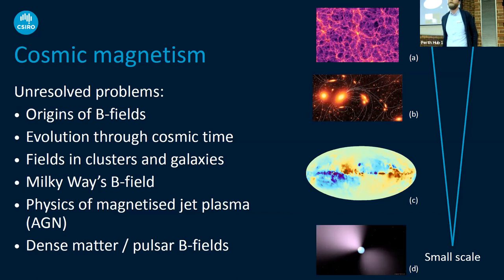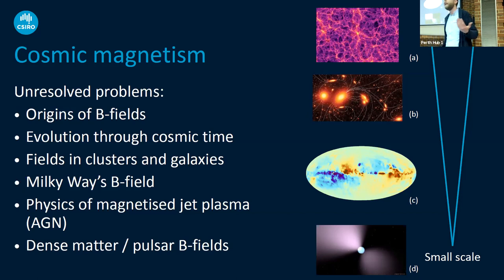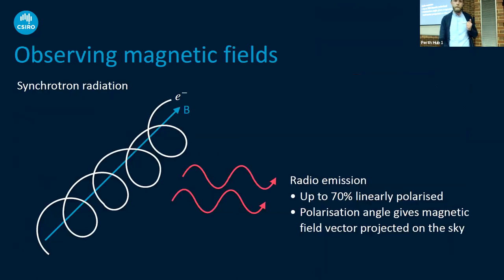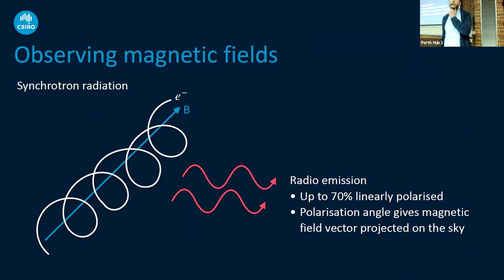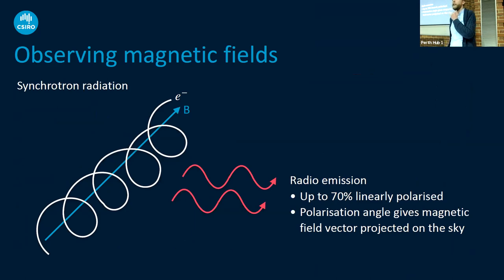There are still a number of unsolved problems in cosmic magnetism, starting from their origin through evolution over cosmic time to their current-day structures in the Milky Way, nearby galaxies, star-forming galaxies, jets of AGN, clusters, and dense regions like pulsars. We'll continue the theme of focusing on polarized radio emission to study magnetic fields. One method is studying polarized synchrotron radiation — its intrinsic polarization angle corresponds to the angle of the magnetic field in the plane of the sky, letting us study the plane-of-sky structures from synchrotron-emitting regions.